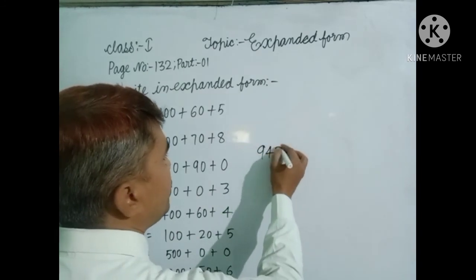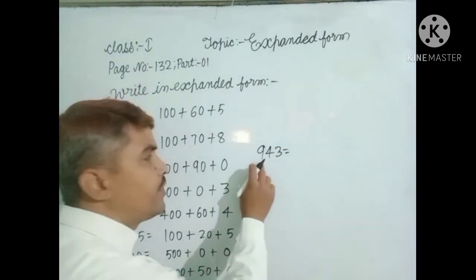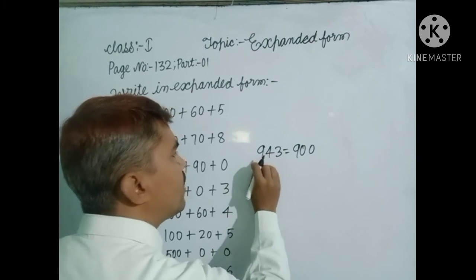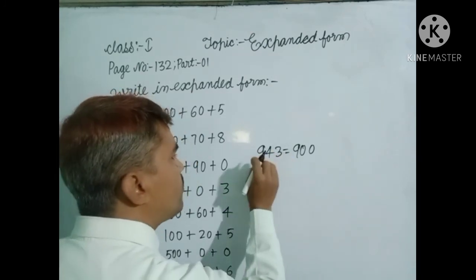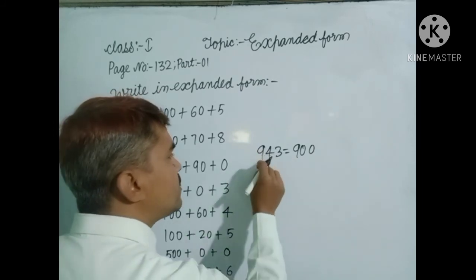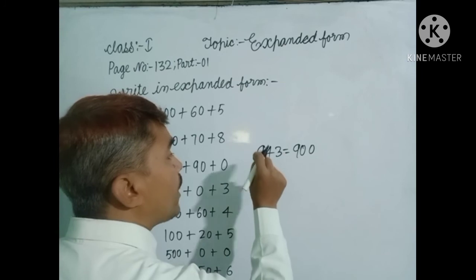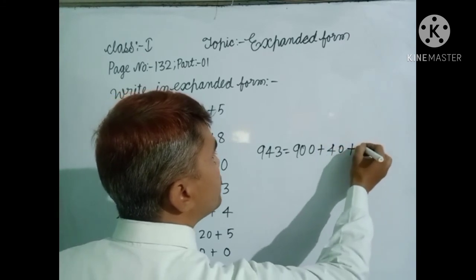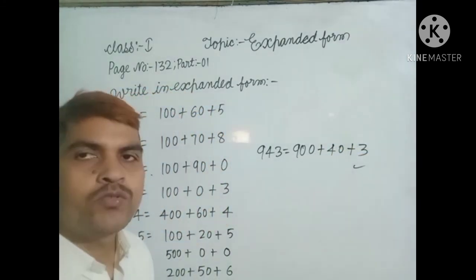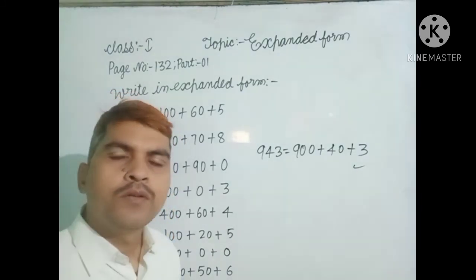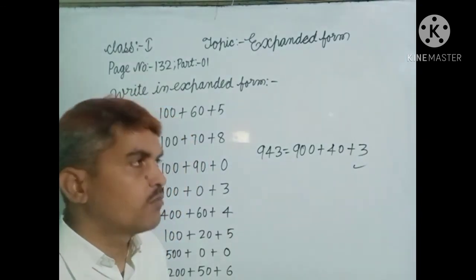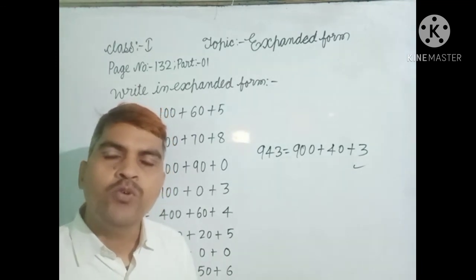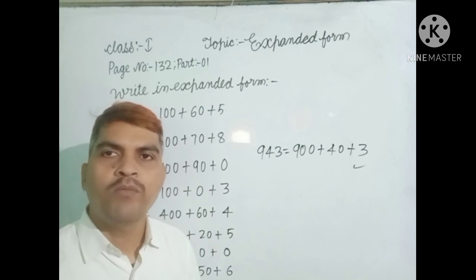This is the last question: 943. You start from the leftmost number. The leftmost number is 9, so the hundreds digit is 9, write down 900. Then 4 tens means 40, and 3 ones means 3. In this way, dear students, you can make all types of questions from page number 132. Make many questions yourself. If you have any problems, ask them. Thank you.